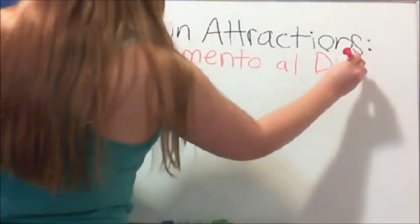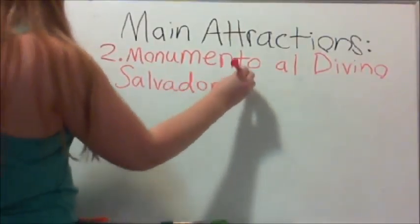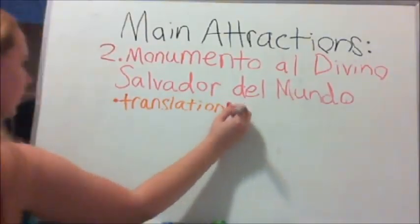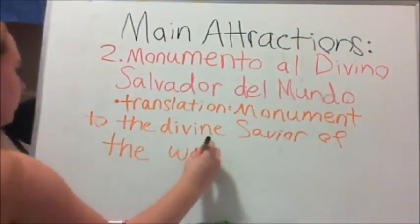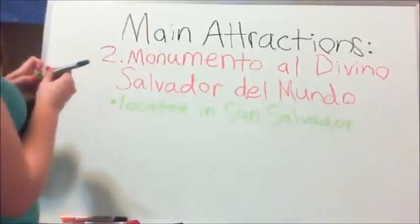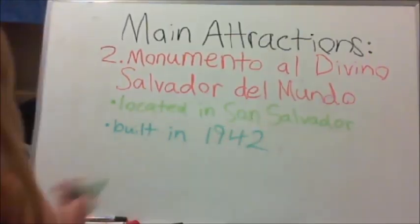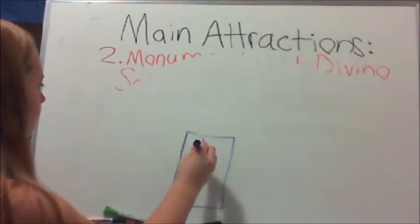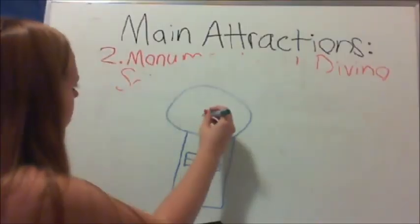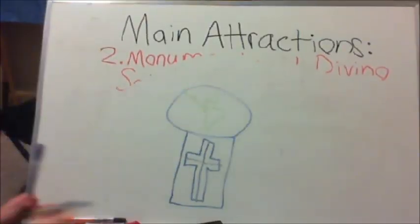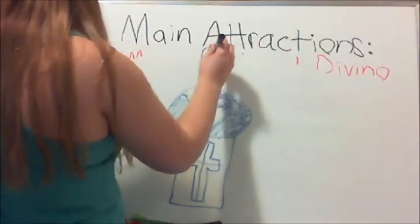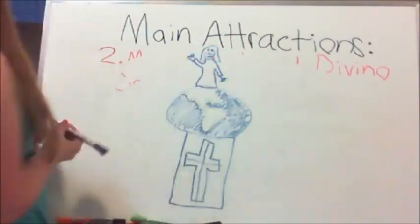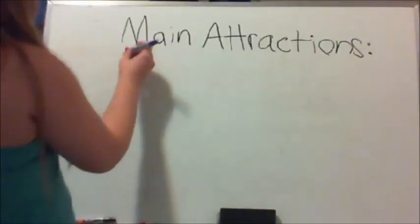The next attraction is El Monumento al Divino Salvador del Mundo, which translates to Monument to the Divine Savior of the World. It is located in San Salvador, the capital city, and was built in 1942. It is basically a stone structure with a cross, a globe, and that's supposed to be Jesus on top of the world.